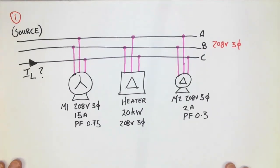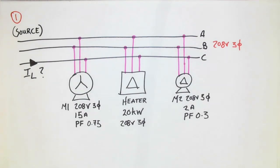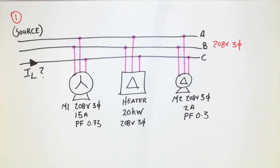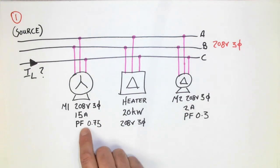The first example has a 208-volt three-phase source. It has a motor, a heater, and motor two. Motor one is 208 volts, three-phase, 15 amps — that would be the line value.